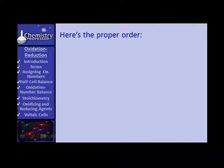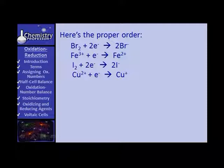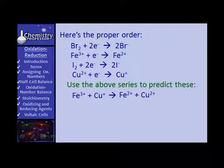Here's the proper order: bromine plus 2 electrons producing bromide ions; the ferric ion plus an electron producing the ferrous ion; iodine plus 2 electrons giving the iodide ion; and copper²⁺ plus an electron giving the cuprous ion. Got it? Do you see why it's that way? Now, use that reduction potential series and predict these reactions. If I were to put the ferric ion with the cuprous ion, would I get a reaction? Yes, I would.